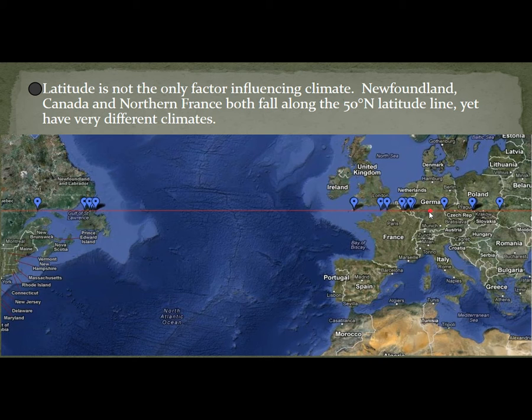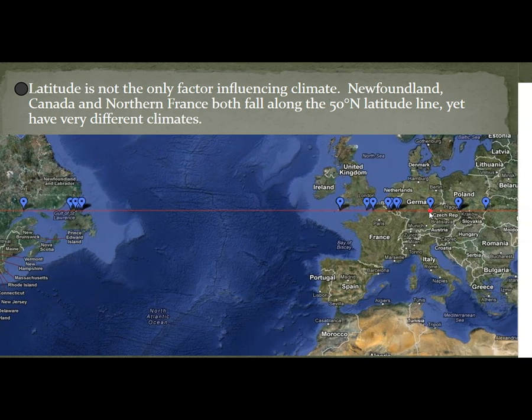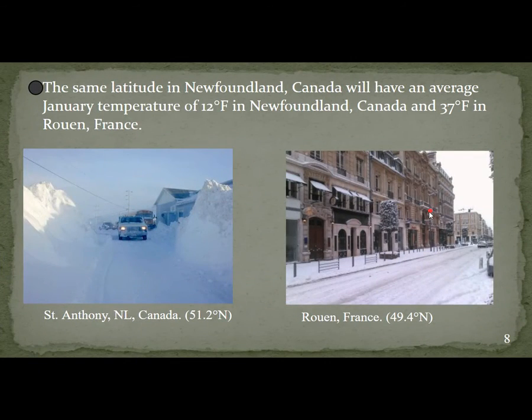At the same latitude, Newfoundland, Canada will have an average January temperature of 12 degrees Fahrenheit, while it'll be 37 degrees Fahrenheit in Rouen, France. Big difference.